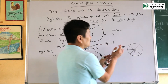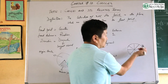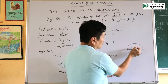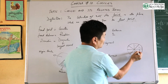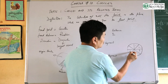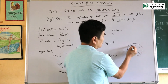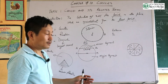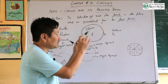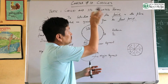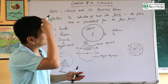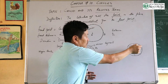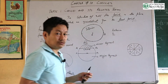This region is called the sector of the circle. If you want to learn about the circle, the sector is the region bounded by two radii and an arc of the circle.